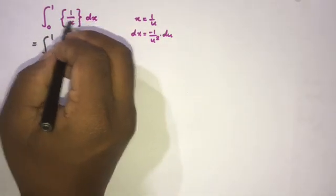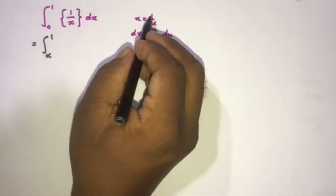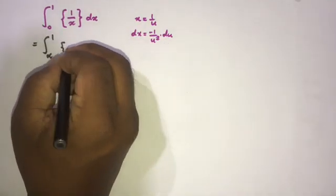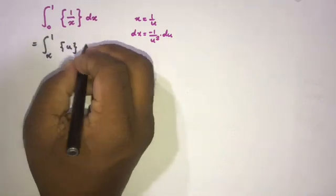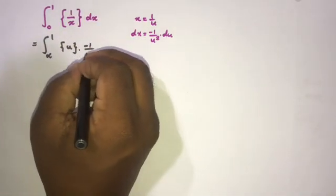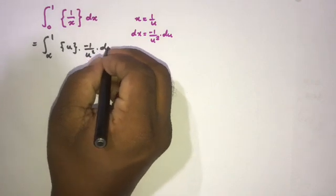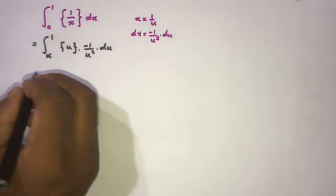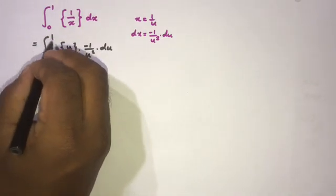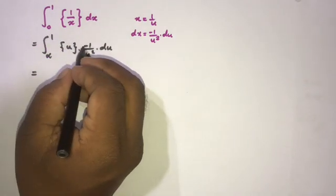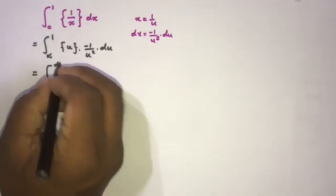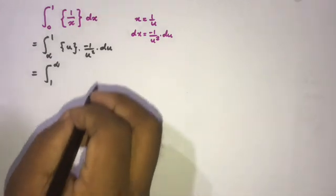Now, the fractional part of 1 over x becomes the fractional part of u, since 1 over x equals u. And dx becomes minus 1 over u squared du. When we swap the boundaries from infinity to 1, this minus sign gets cancelled. So the integral becomes 1 to infinity.